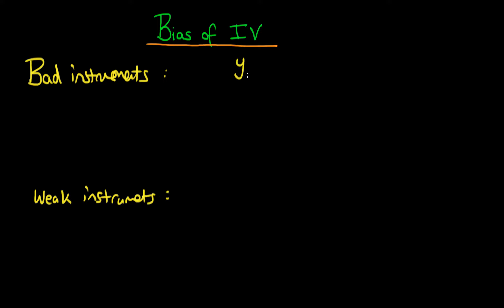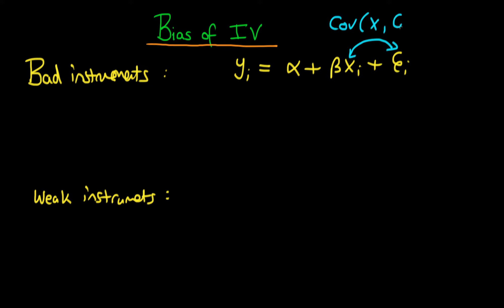The idea here is that we have some sort of relationship of interest which connects y with x. The problem with least squares is that there is some covariance between x and our error epsilon which doesn't equal zero. The idea with instrumental variables estimation is that there is some sort of first stage regression for x in terms of an instrument z.